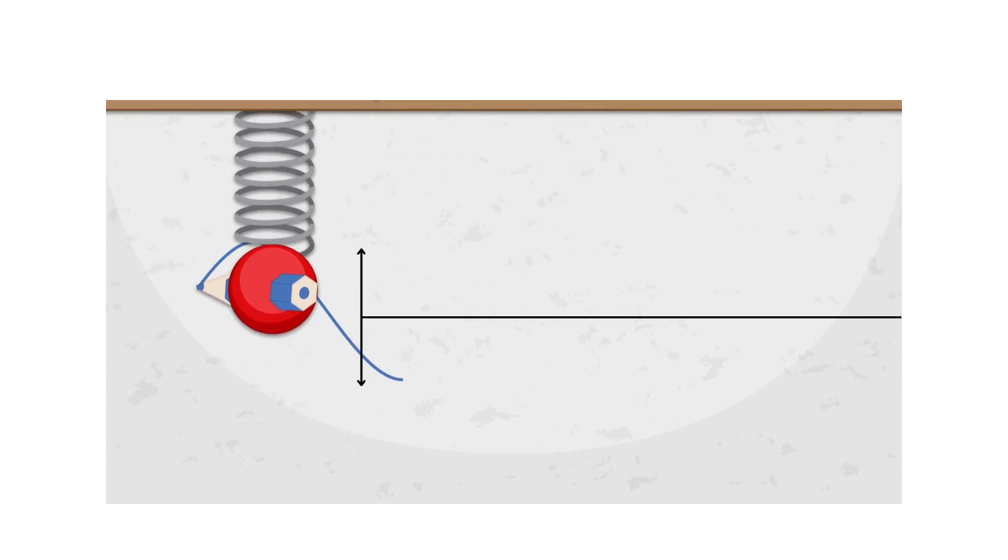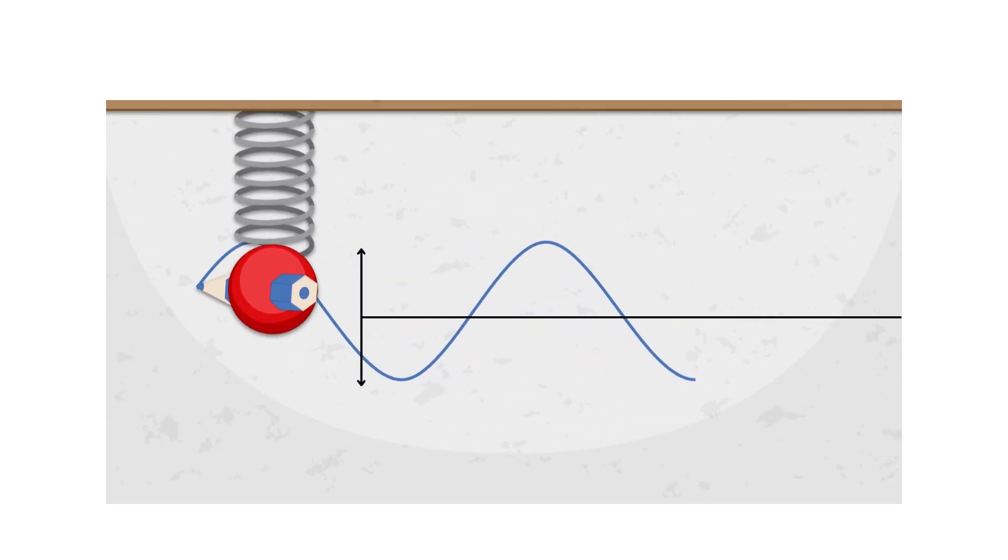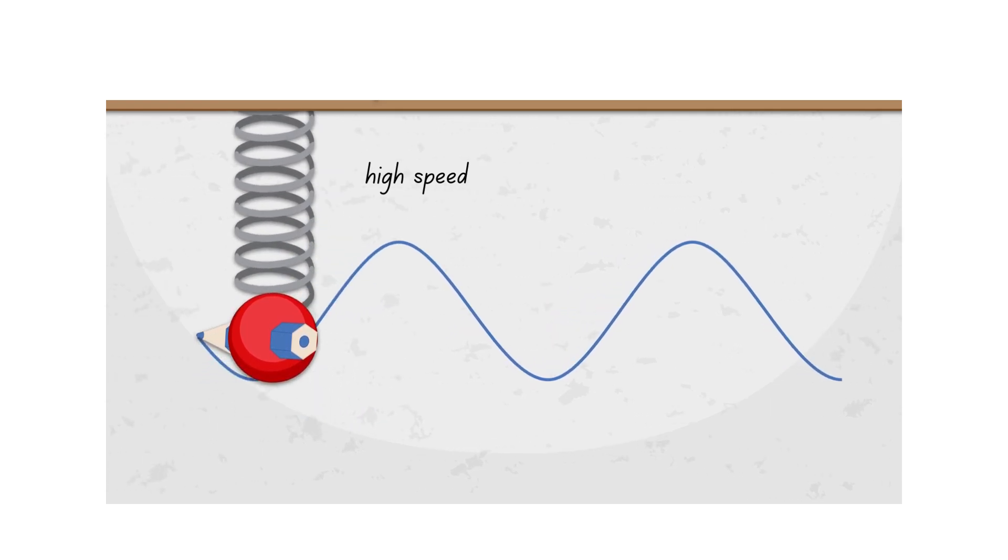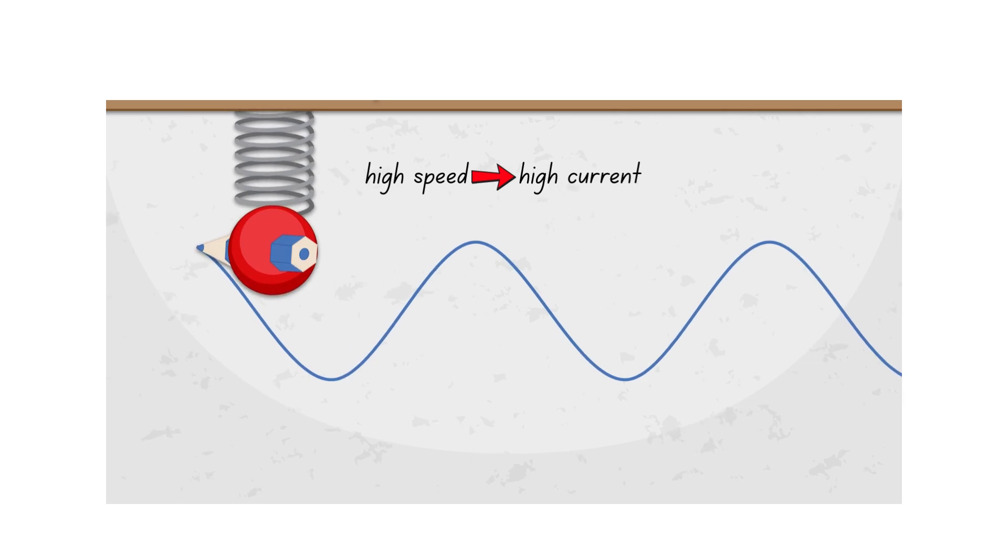so from our analogy, we can describe the magnitude of alternating current in terms of the motion of the particle. A high speed in one direction then implies a high current in that direction, and vice versa.